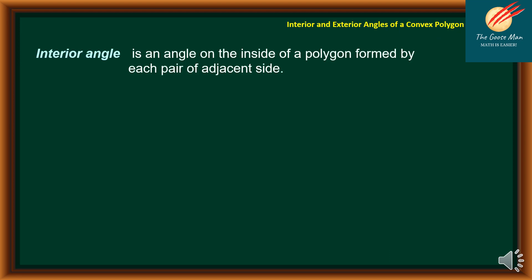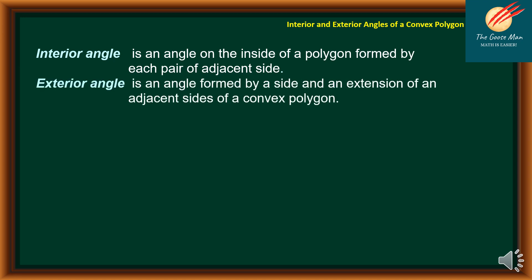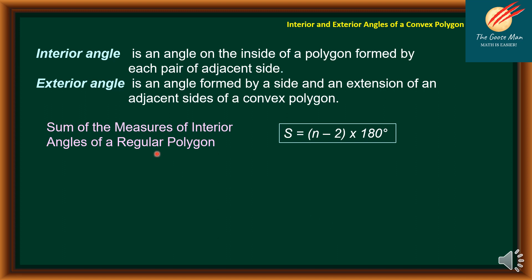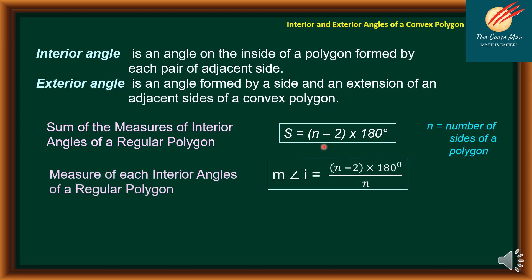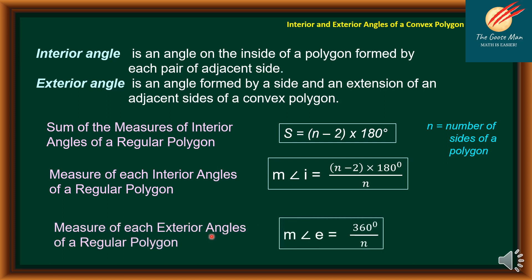To summarize the formulas: the interior angle is an angle on the inside of a polygon formed by each pair of adjacent sides, while the exterior angle is formed by a side and extension of adjacent sides. The sum of interior angles of a regular polygon is S equals (N minus 2) times 180. The measure of each interior angle of a regular polygon is (N minus 2) times 180, divided by N. Finally, the measure of each exterior angle of a regular polygon is 360 degrees divided by N. Note that if we add all exterior angles of a polygon, the sum is always 360 degrees.